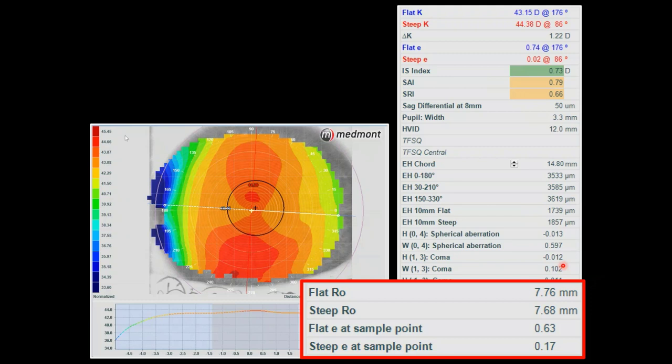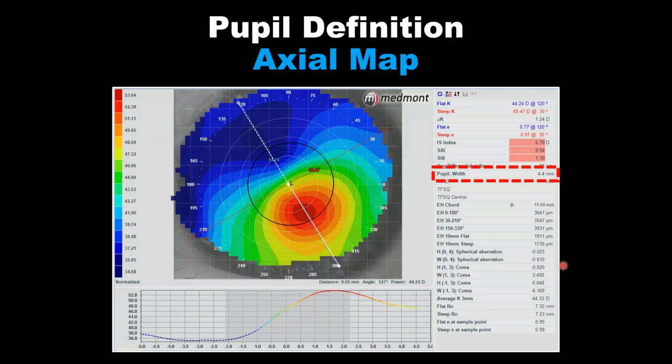Your lab can tell you the information you want to pull out of your Medmont topographer. Your distributor may be able to assist with constructing these attributes or finding attributes that may already exist.